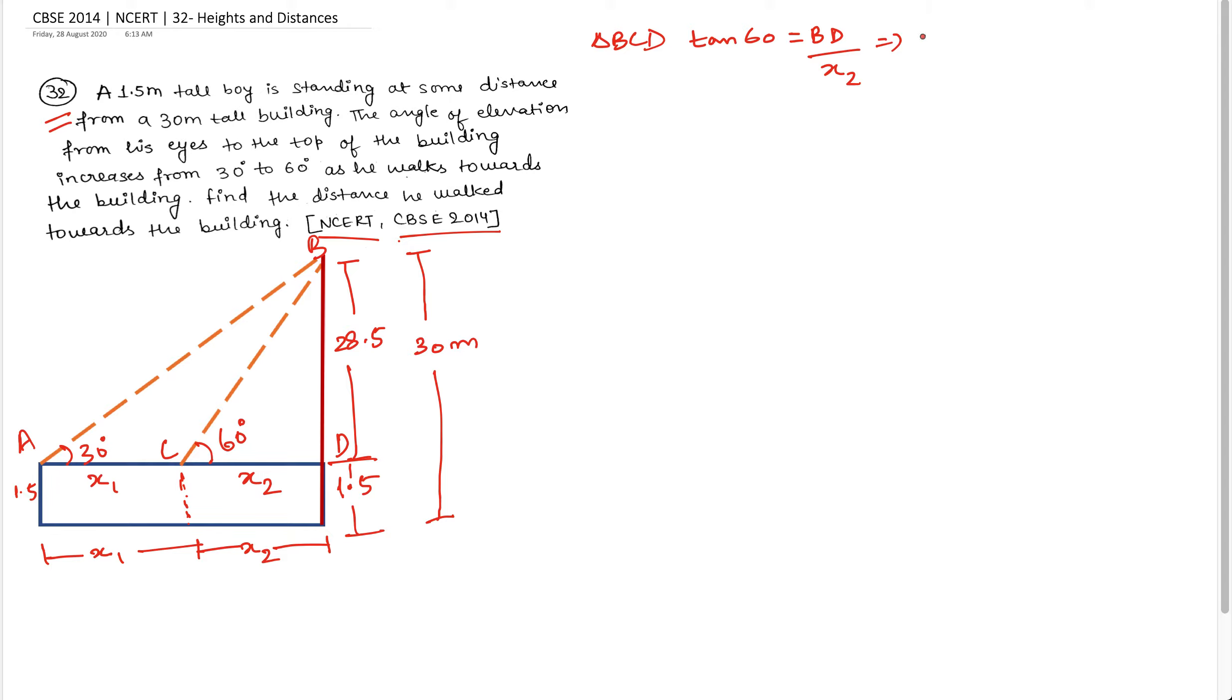So root 3 equals BD. BD value is 28.5 upon x2. So here I have x2's value. x2 is equal to 28.5 upon root 3. So this is done.